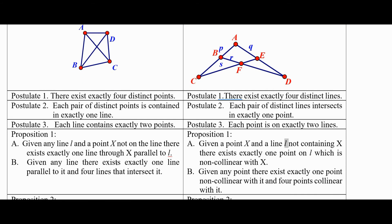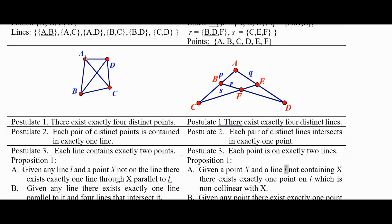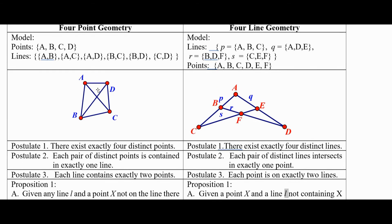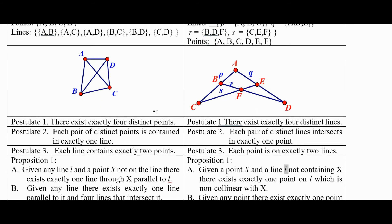Given any line, there exists exactly one line parallel to it and four lines that intersect it. So given any line, so let's start with line AB, there are one, two, three, four lines intersect it, one parallel.